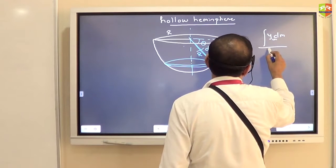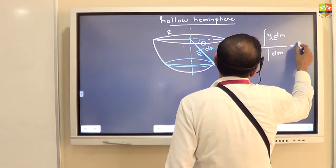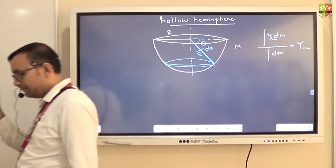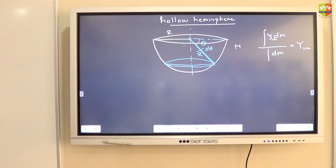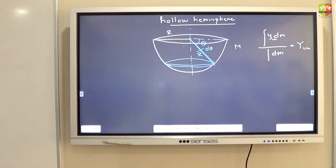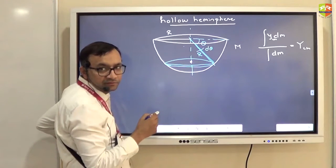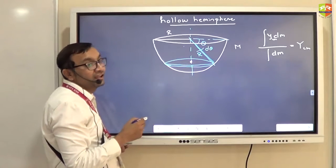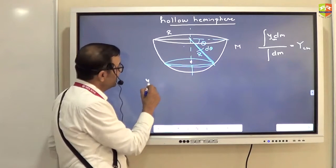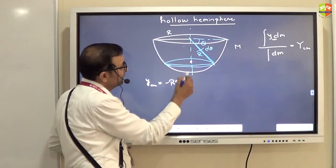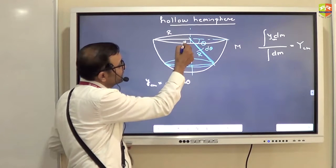I will just write the formula. Find out dm, find out ycm of the dm, then integrate it. What will be the ycm of the dm? Where is the center of mass of the ring? At its center. What is the y-coordinate of the center? It is minus R sinθ. So ycm is minus R sinθ. This distance is the center of mass distance.